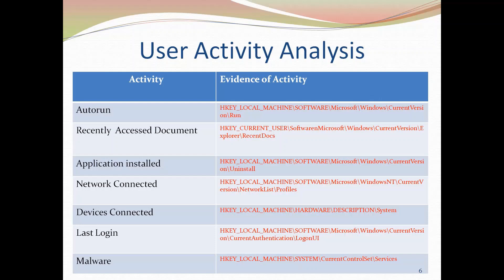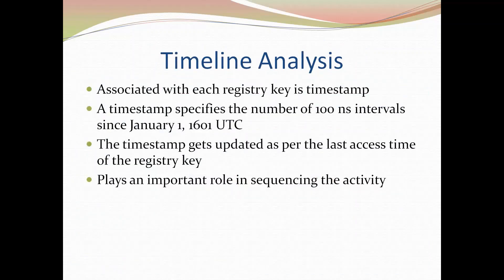How can we know whether a particular person installed that software? If we can get a timestamp — each registry key has a timestamp indicating the last access date — then if changes were made at a certain time, that will be the last access time of that particular registry key.